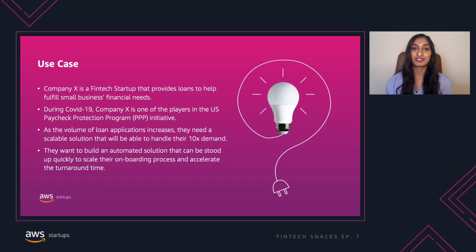Company X is a fintech startup that provides loans to help fulfill small businesses' financial needs. During COVID-19, the United States rolled out a paycheck protection program that offers loans to small businesses so they can keep their workforce, and Company X is one of the lenders in this initiative. As the volume of loan applications increases, they need a scalable solution able to handle 10x demand. They'd like to build an automated solution that can be stood up quickly to start onboarding customers and accelerate loan approval times.